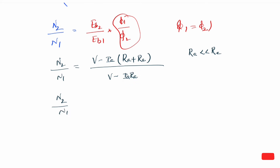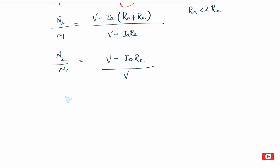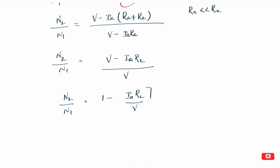So N2 by N1 is equal to V minus Ia·Re divided by V minus Ia·Ra, which simplifies. The second case speed divided by first case speed is equal to 1 minus Ia·Re divided by V. So the formula is: N2/N1 = 1 minus Ia·Re by V.